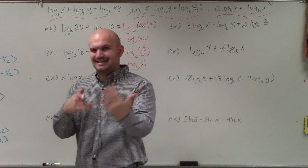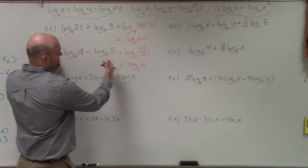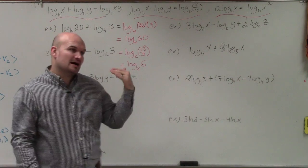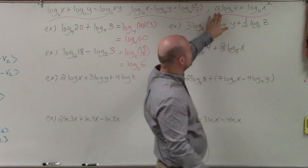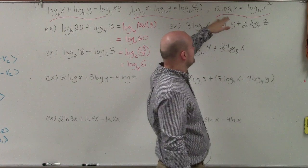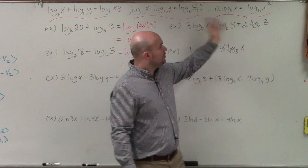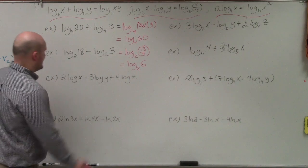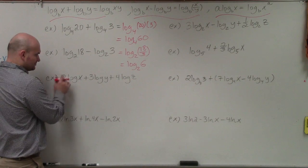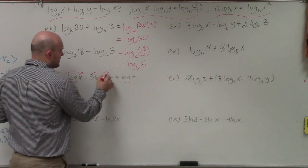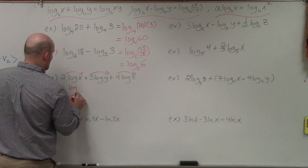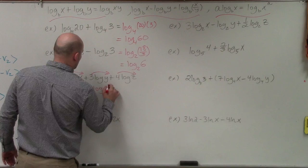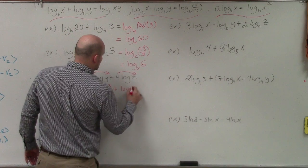The main important thing is taking these expressions and condensing them down to one logarithmic expression. Now I'm going to start incorporating the power rule. The power rule states that if you have a value being multiplied in front of your logarithm, you can rewrite that as the power of your logarithm. So I'm going to apply the power rule to get log of x squared plus log of y cubed plus log of z to the fourth.